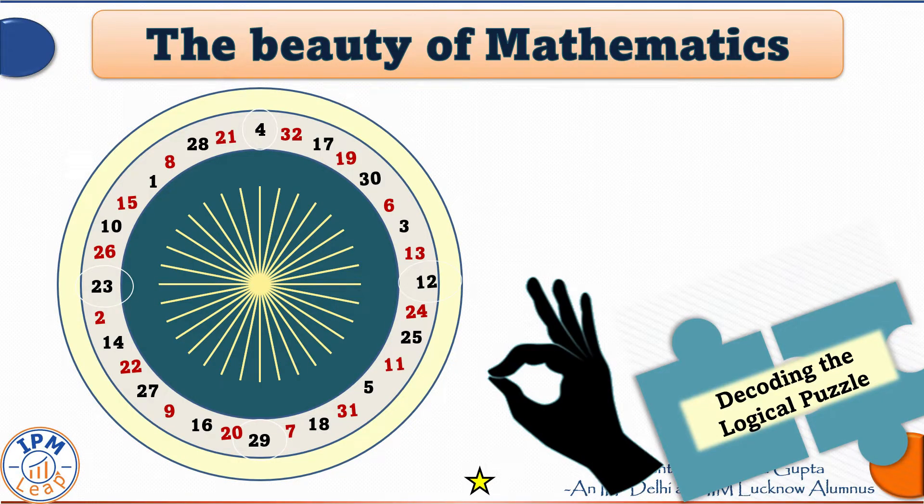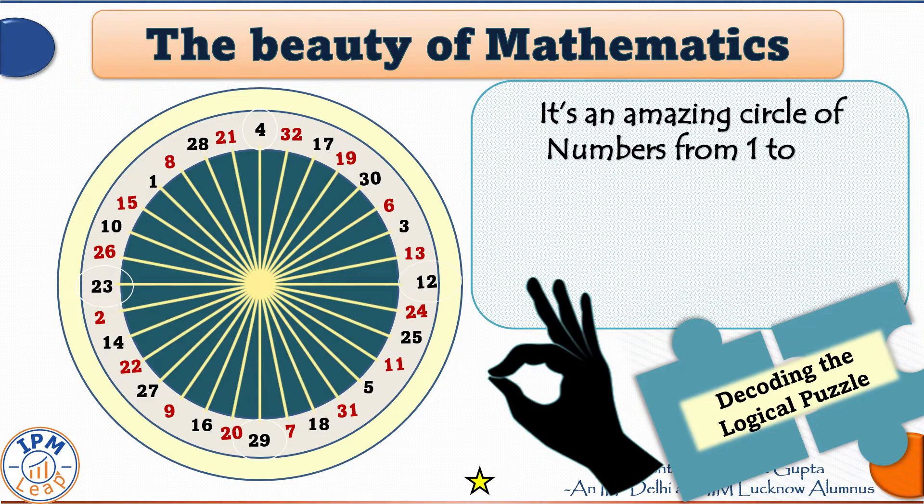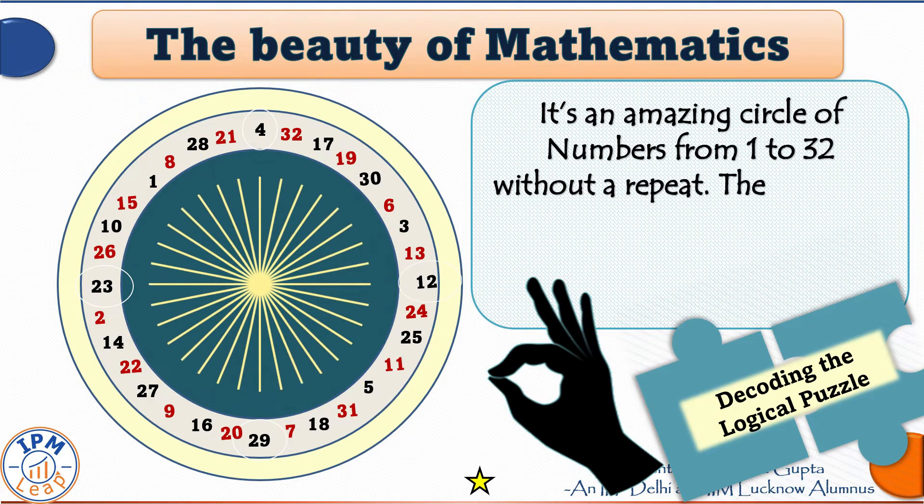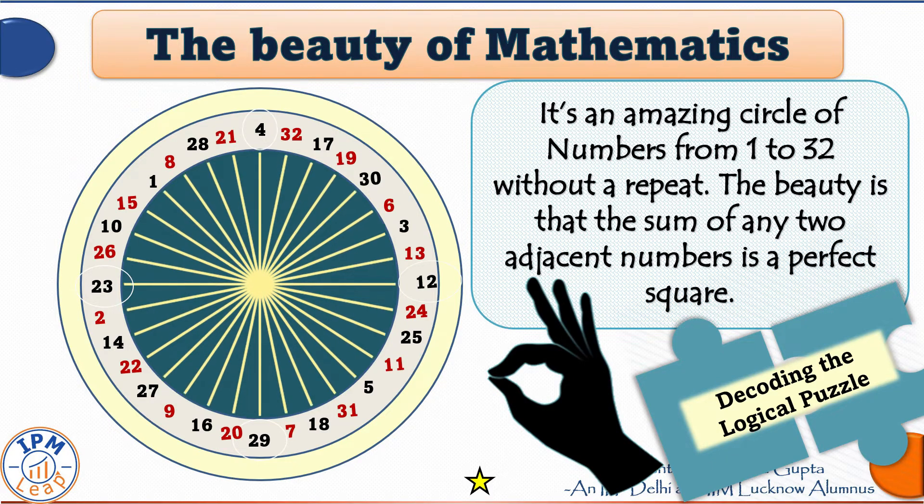Hi everyone, today we are going to show you the beauty of mathematics. On your screen you can see an amazing circle of numbers from 1 to 32 without a repeat. The beauty is that the sum of any two adjacent numbers is a perfect square.